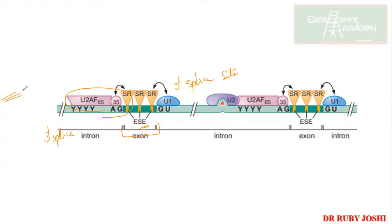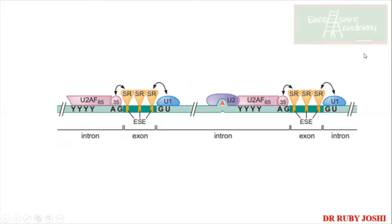All these proteins are making sure that the spliceosome machinery is positioned correctly to carry out further splicing steps. This is how the spliceosome machinery ensures that the regions it removes are the correct authentic regions.